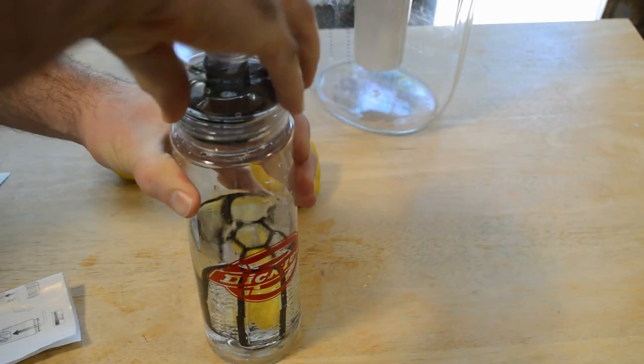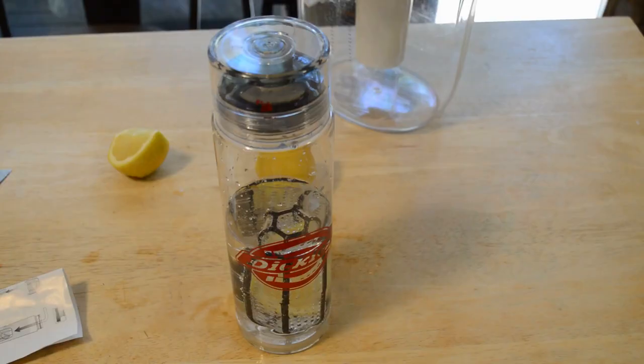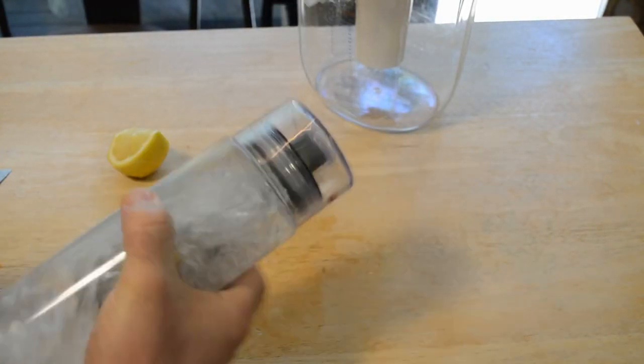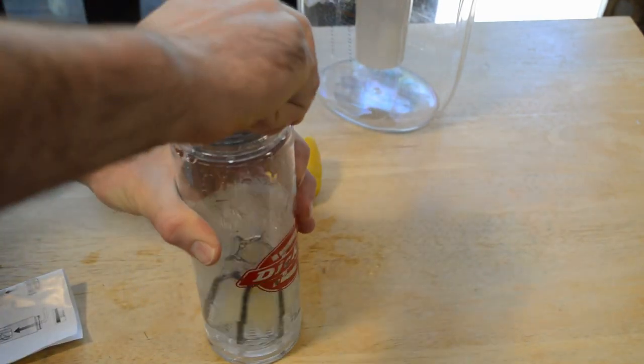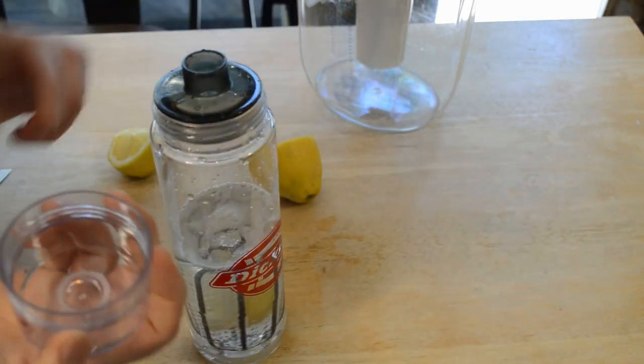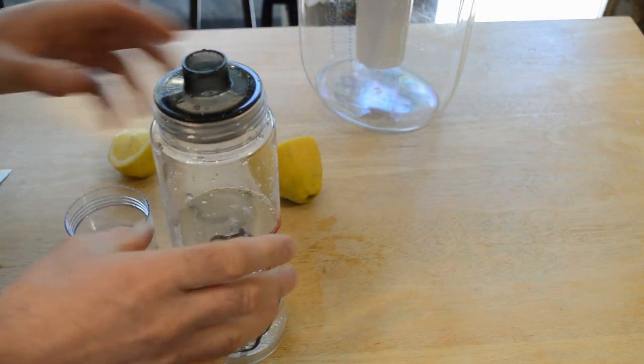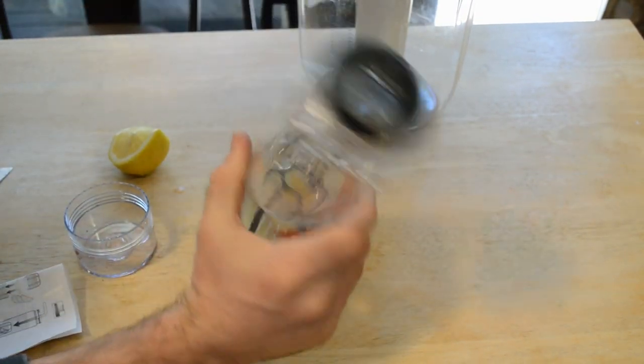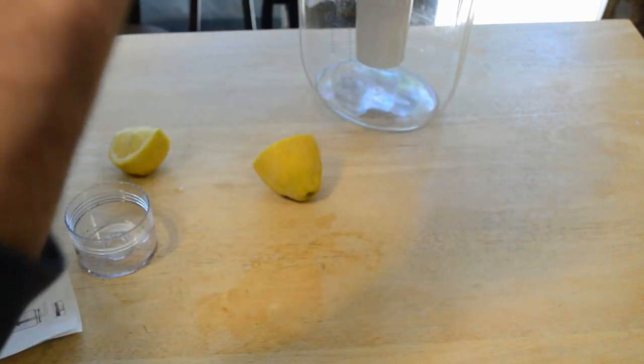Alright, let's shake it up. Let me just shake it a little bit more and take it off. As you can see, it didn't leak around here at all. Alright, taste test here we go to the lemon mix Dickies water bottle.